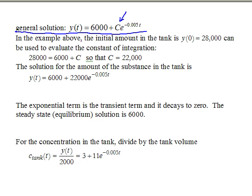I repeat it over here, the general solution still has this constant. I want to evaluate the constant. So let's say I know the initial amount in the tank, so y at 0 equals 28,000. So 28,000 equals 6,000 plus c, because e to the minus 0 is 1. I can solve for c, and c is 22,000.